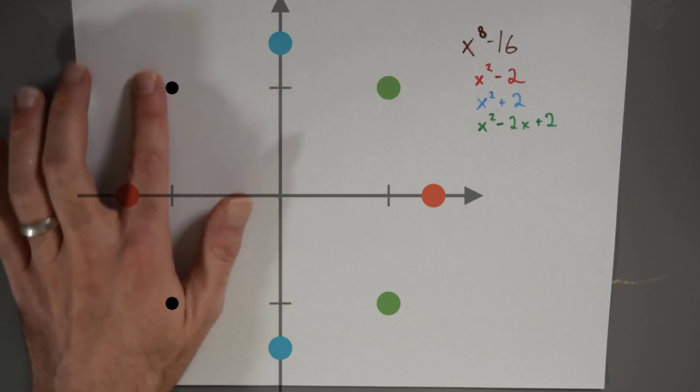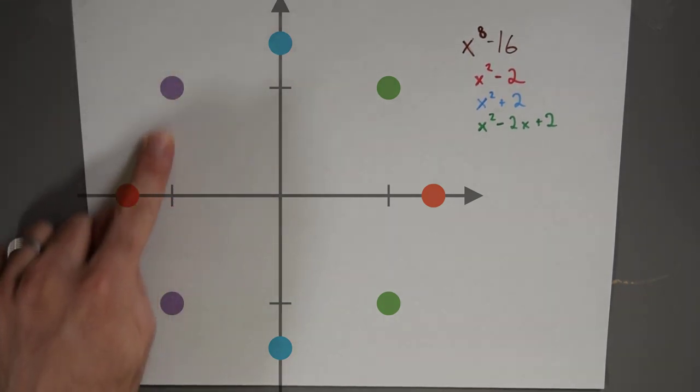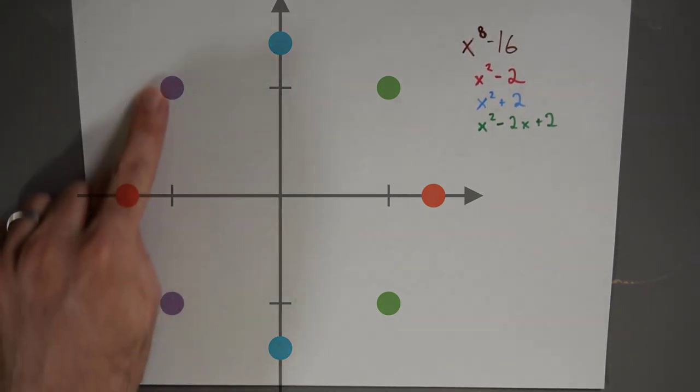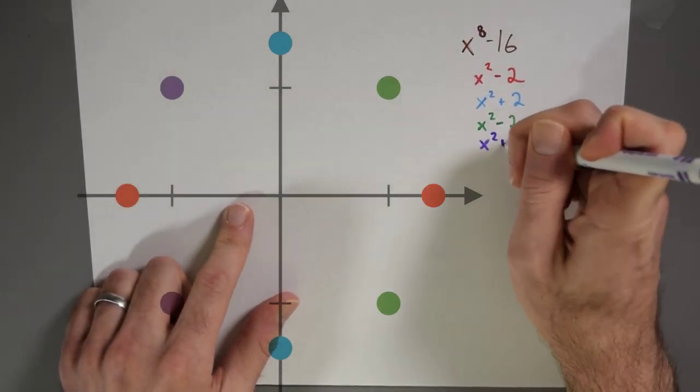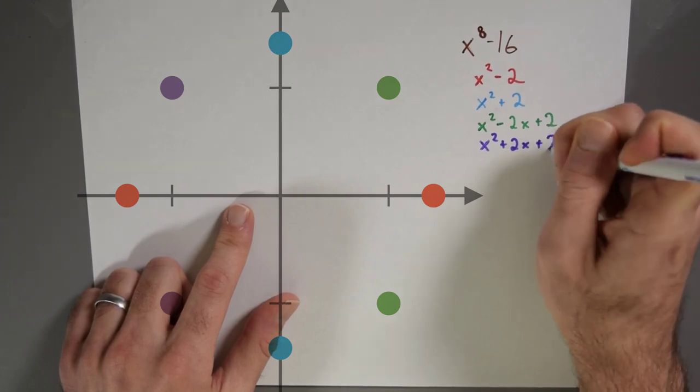And then over here in purple, I've got two more roots which give me the polynomial x squared plus 2x plus 2.